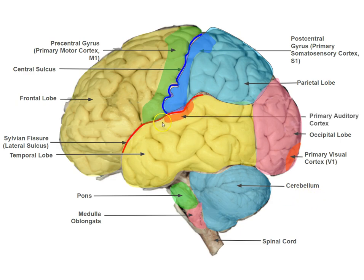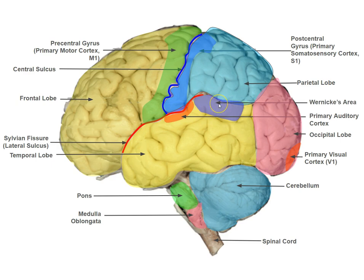Here on the superior temporal lobe is primary auditory cortex, the first part of cortex that gets input from the ears. It actually extends into the sylvian fissure quite far. And then Wernicke's area right here — an area we'll learn about at the end of the semester — is crucial for language processing. And over here is Broca's area, another important area for language production.